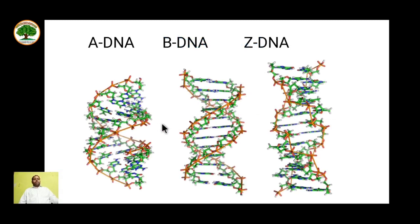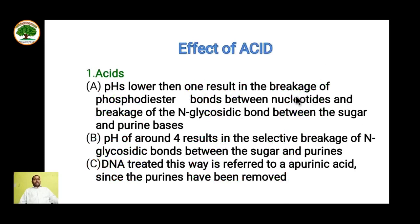These are how the different forms of DNA look. Regarding the effects of acid on DNA: pH lower than 1 results in breakage of the phosphodiester bond between nucleotides and breakage of the N-glycosidic bond between sugar and bases. A pH around 4 results in selective breakage of the N-glycosidic bond between sugar and purines. DNA treated this way is called apurinic acid, since adenine or guanine has been removed.